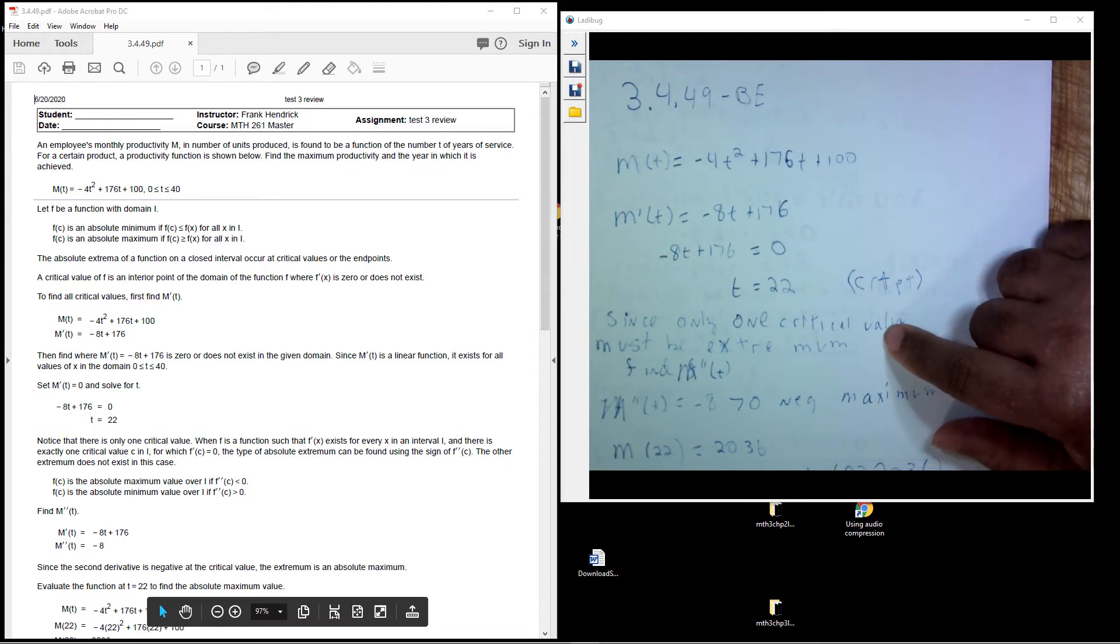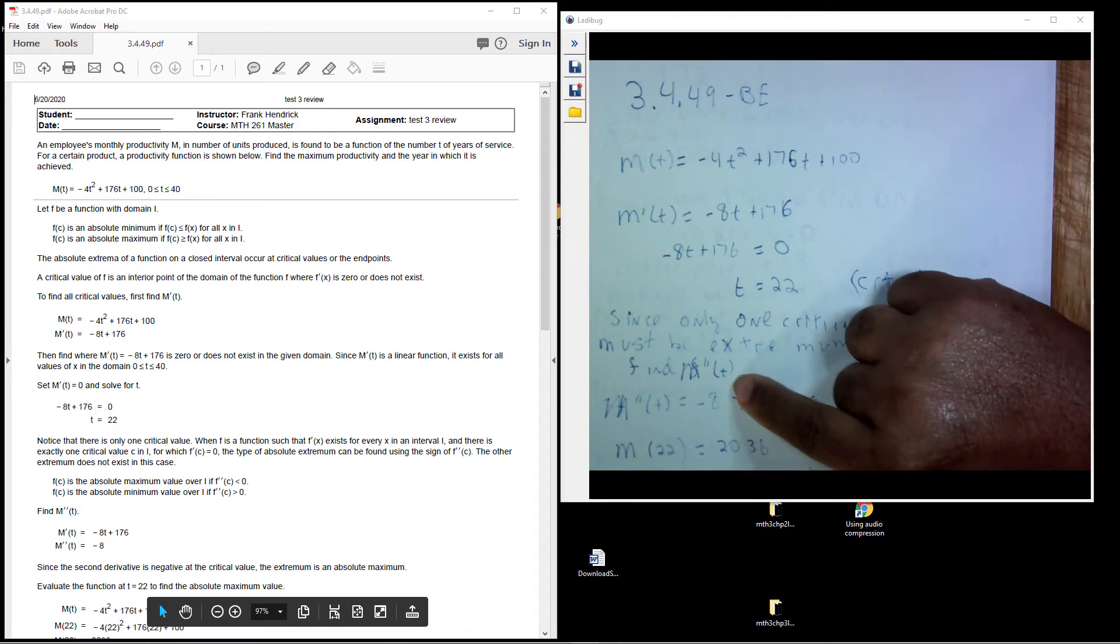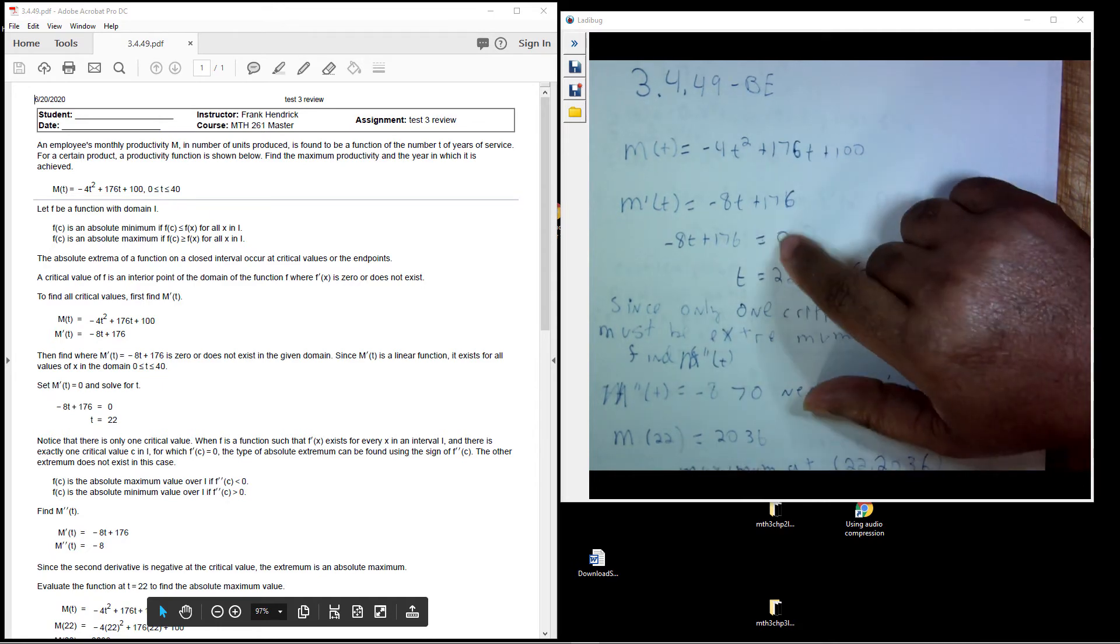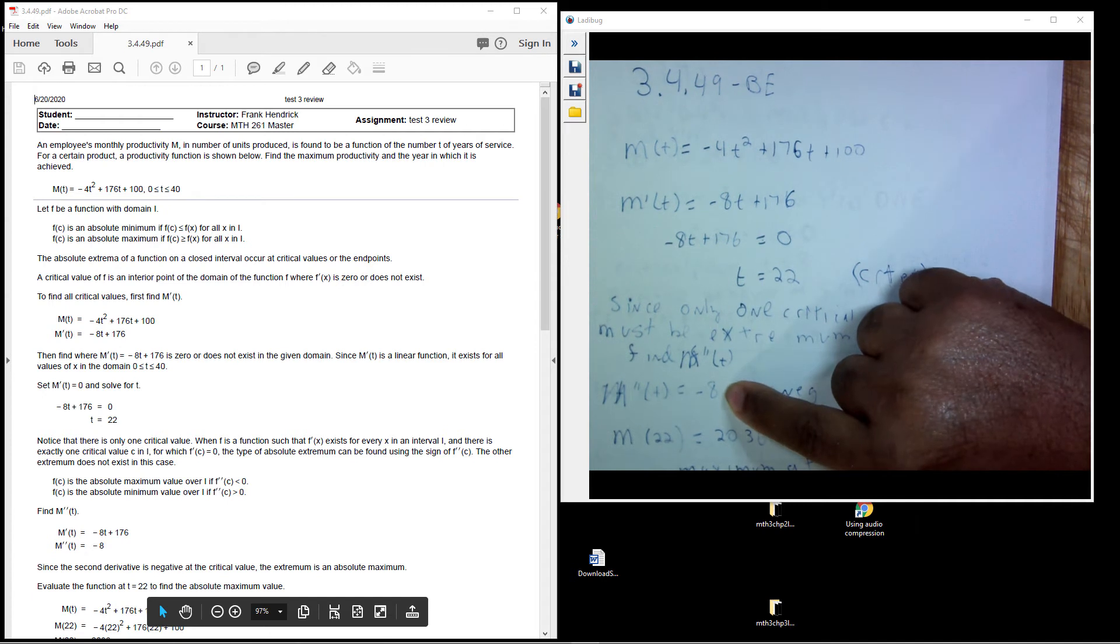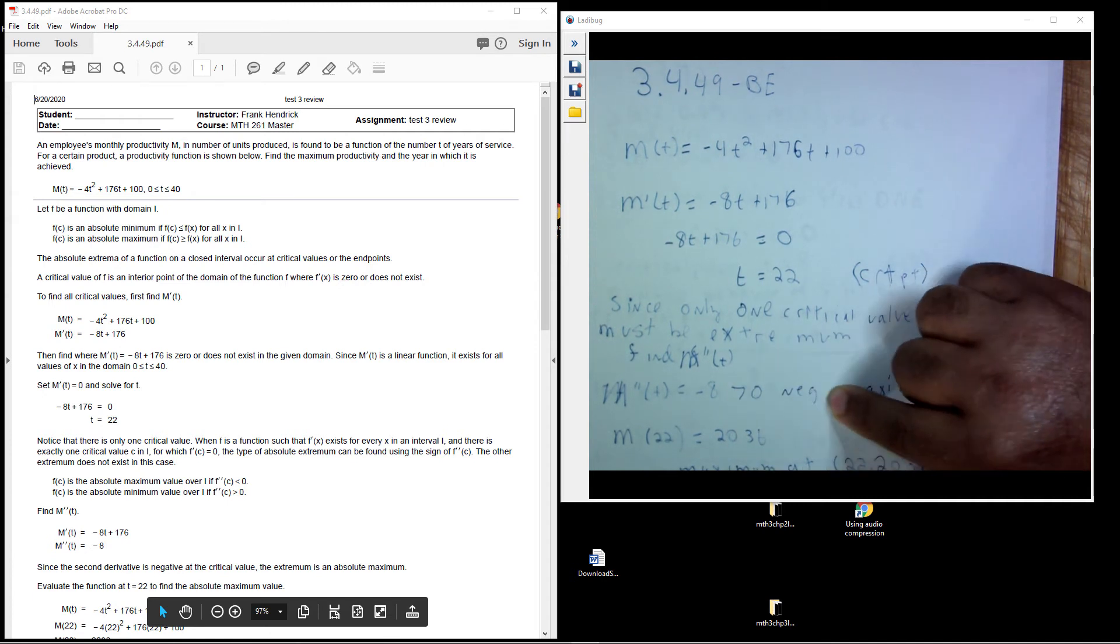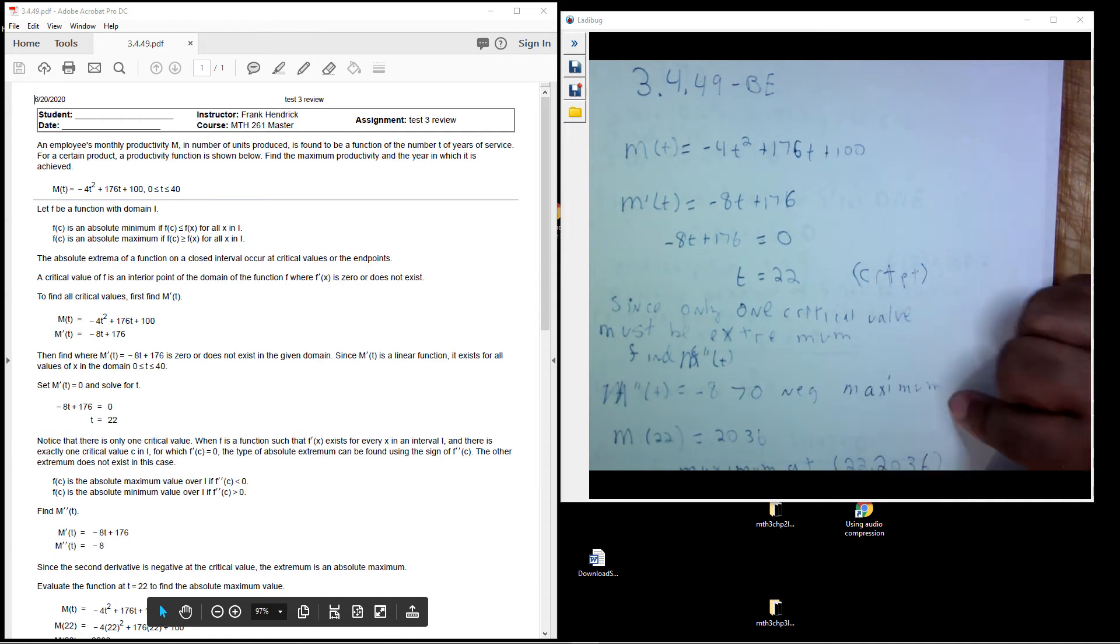Now we use a different rule here. Since we only have one critical point, it must be an extremum of some type. So we'll use the second derivative to find out which one it is going to be, either a max or a min. I take the second derivative of this first derivative and it gives me a negative eight. It's negative, so we have a maximum.